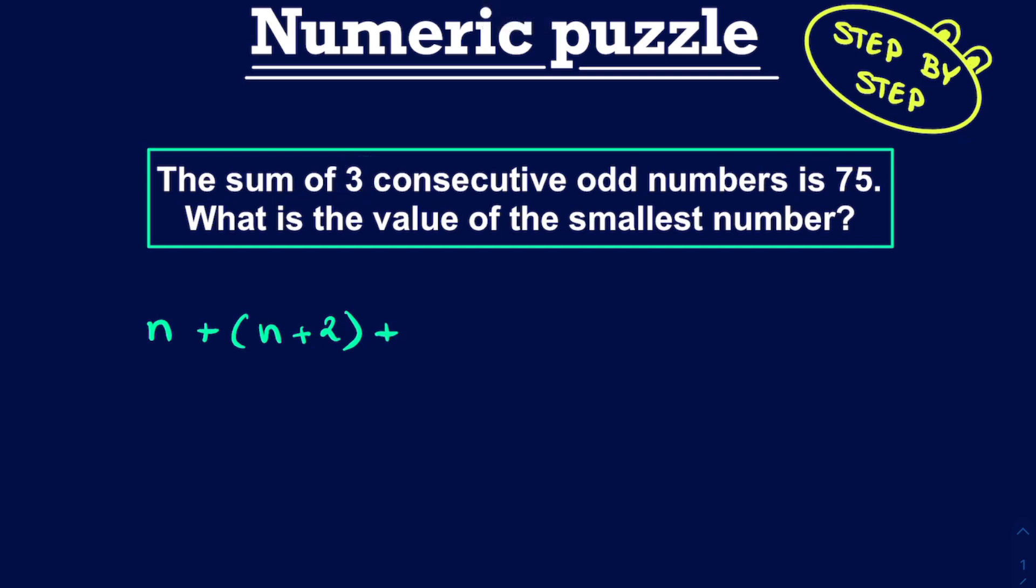we need to add three consecutive odd numbers together. Therefore, we add the next odd number, which would be n plus 4. Which is, of course, the previous odd number, n plus 2, plus 2, which is n plus 4.